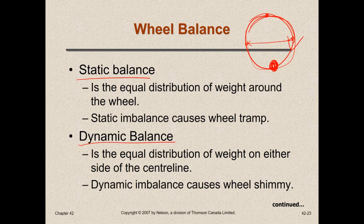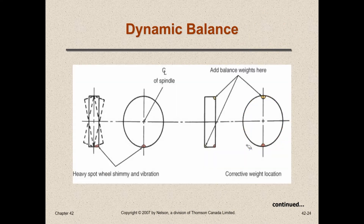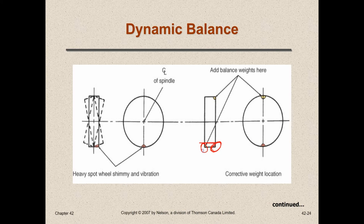Dynamic balance is a bit different — it's the equal distribution of weight on either side of the center line of the wheel. If one side is heavier than the other, the tire will shimmy side to side as you drive down the road. This side-to-side movement causes the tire to gouge out on opposing sides, which is called cupping.